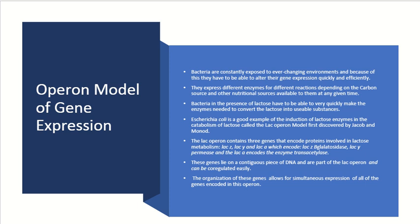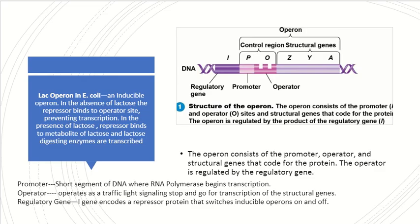The lac operon contains three genes that encode proteins involved in lactose metabolism: lacZ, lacY, and lacA — which encode beta-galactosidase, lacY permease, and lacA trans-acetylase respectively. These genes lie on a continuous piece of DNA that are part of the lac operon and can be co-regulated simultaneously. The organization of these genes allows simultaneous expression of all genes coded in the operon. The structure of the operon along a DNA chain involves a promoter, then an operator sequence, and then the actual genes themselves.